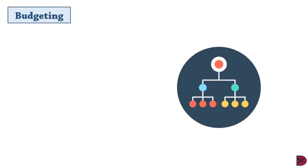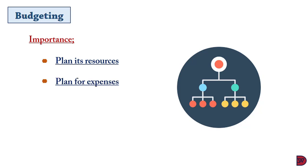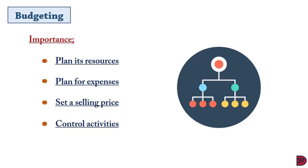Now let's look at why management accountants are interested in budgeting. Budgeting is important because it helps a business plan for its resources — at the beginning of the year a business can determine how much they want to sell. Secondly, budgeting helps to plan for expenses; once you know the quantity of resources needed, you can determine cost per unit and the total financial requirement. Thirdly, budgeting is essential for setting a selling price — you add a margin or markup to arrive at a selling price. Lastly, it enables control: you compare the budget to actual performance and any deviations can be easily remedied.